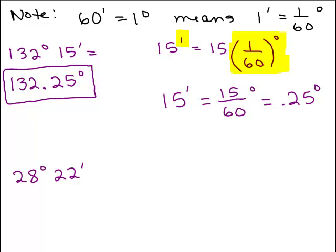So I've just converted from degrees and minutes to just a decimal number here. We're going to do the same thing with the next problem. So again, I know that the whole number part is going to be 28. That can't change. You can't all of a sudden get 29 degrees when 22 minutes is not even a whole degree. So I start the same way.